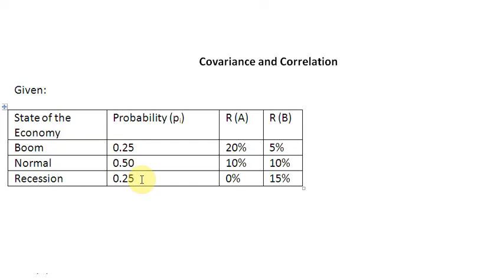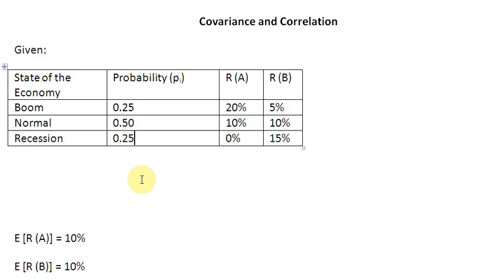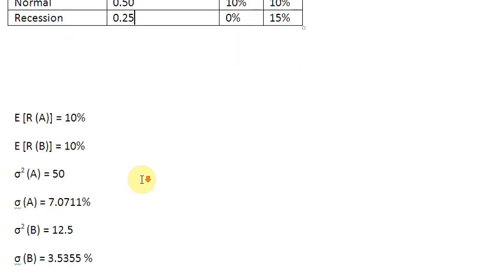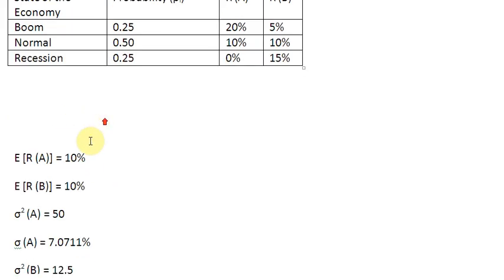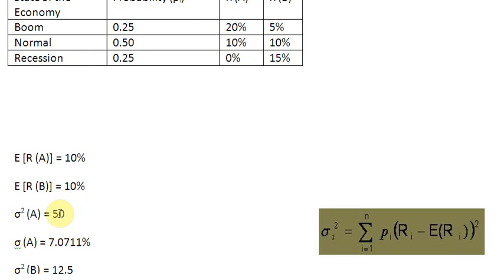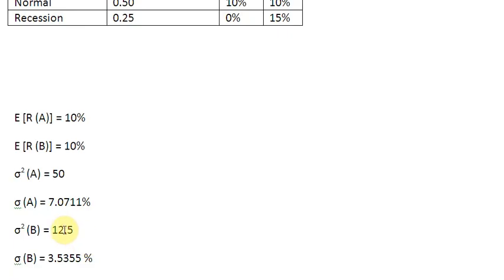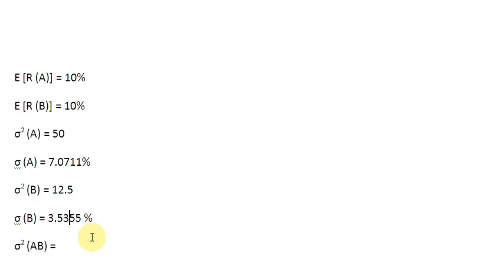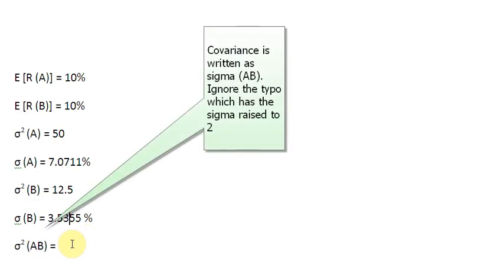We have also been supplied with the return and standard deviation data about these assets. The expected return on asset A is 10%. The expected return on asset B is also 10%. The variance for asset A's return is 50% and the standard deviation is 7.0711%. The variance of asset B's returns is 12.5%, giving a standard deviation of 3.5355%.